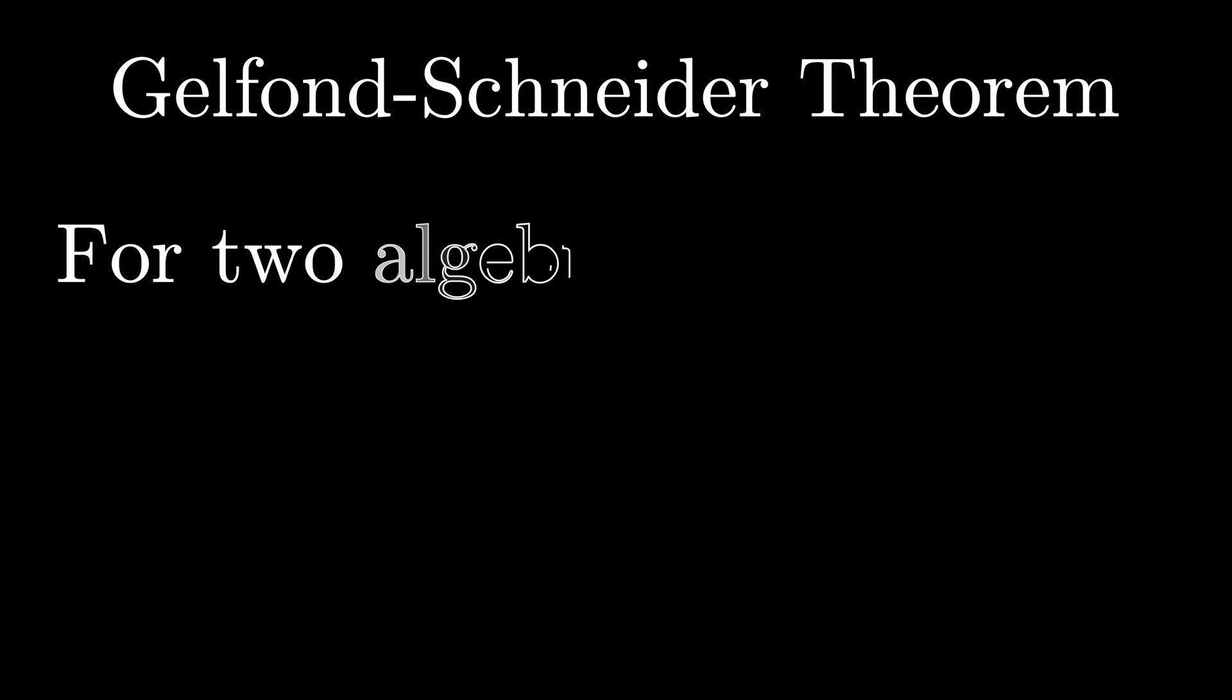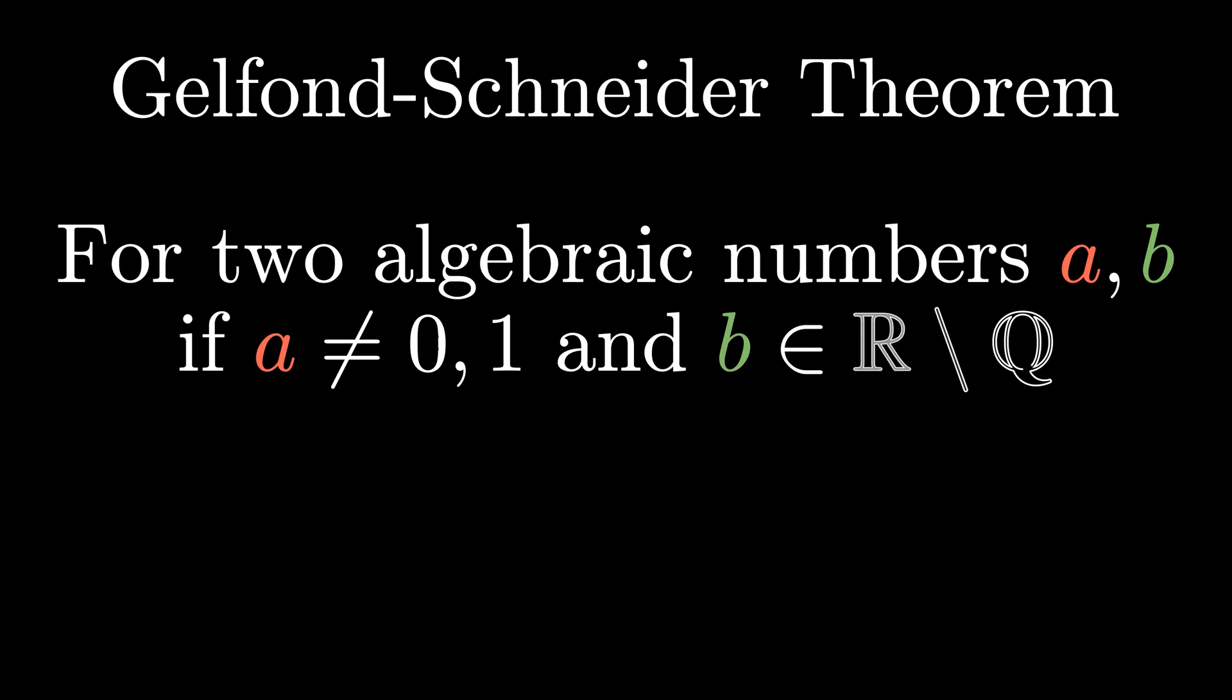To show this, we can use the Gelfond-Schneider theorem, which says that for two algebraic numbers a and b, if a is not equal to 0 or 1 and b is irrational, a to the b is transcendental.